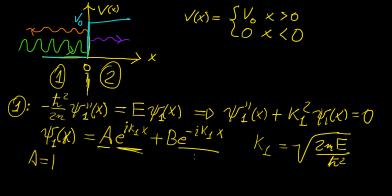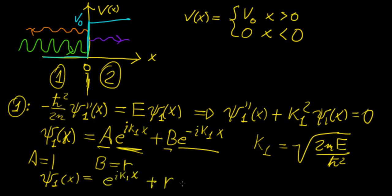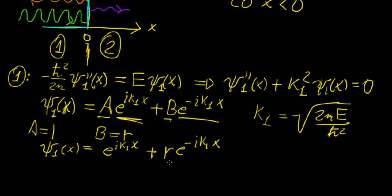Notice what happens with the second term: we have a backwards-propagating wave with amplitude B. Let's call that amplitude R, where R stands for the reflection coefficient. You can imagine the amplitude is based on how much of the incident wave gets reflected once it hits the interface. So we can write our solution in region 1 as ψ₁(x) = e^(ik₁x) + R·e^(-ik₁x). We found the two arbitrary constants using physical reasoning — no boundary conditions needed yet. To find the actual coefficient R, we'll need to do more work, but first we need to define the function in the second region.